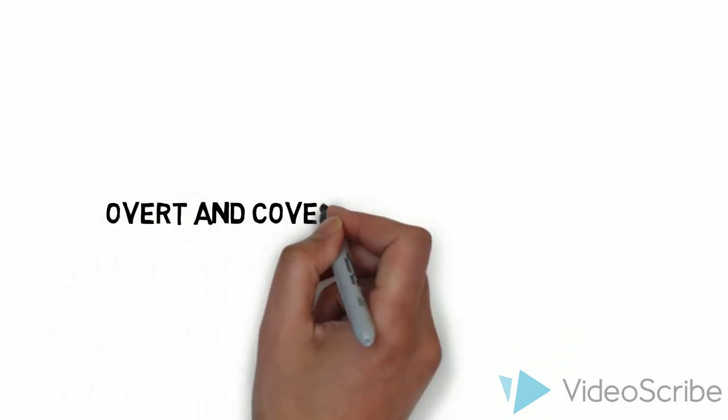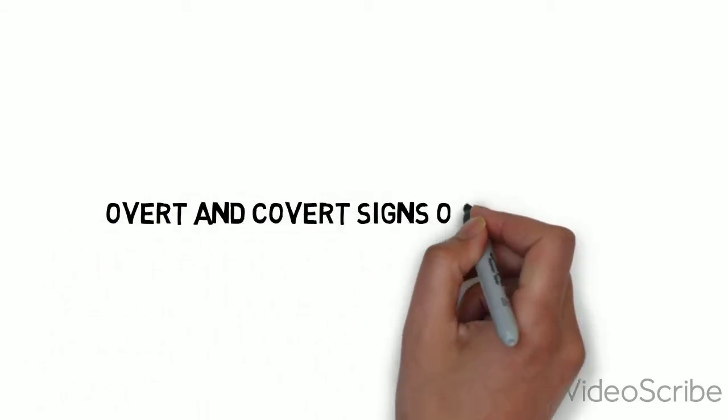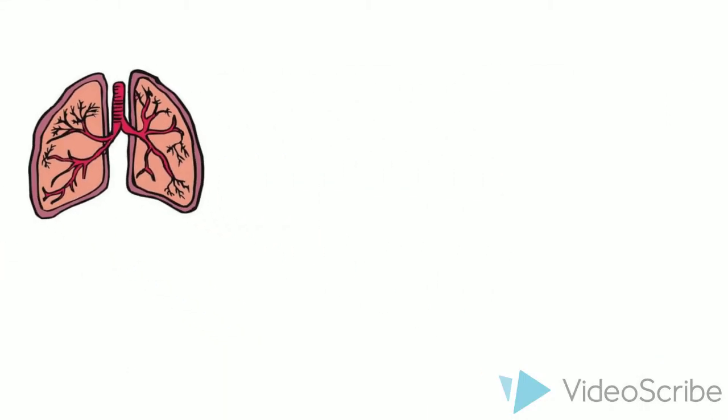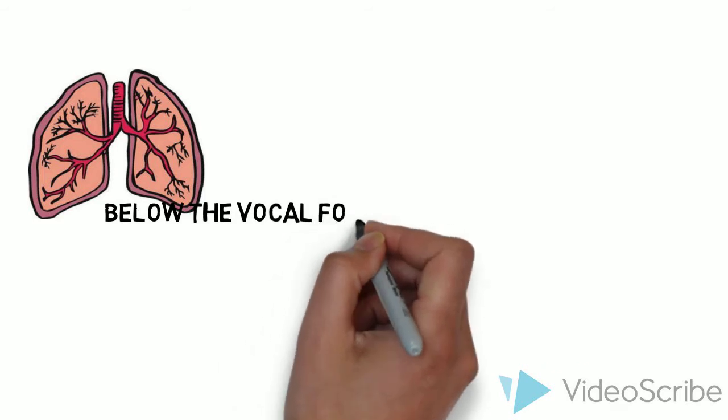This presentation explains the overt and covert signs of aspiration. Aspiration occurs when food or liquid travels below the vocal folds and into the lungs rather than down the esophagus.